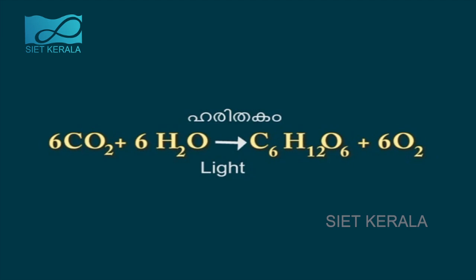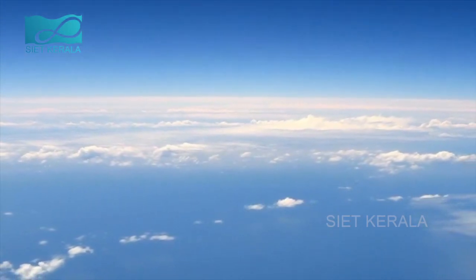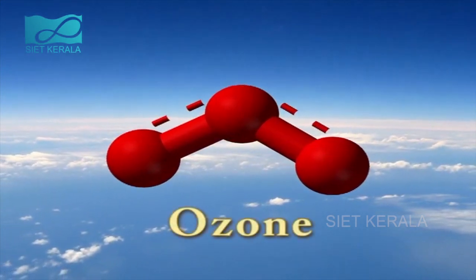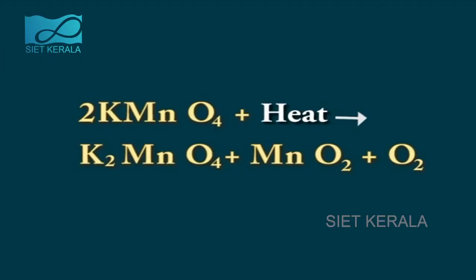Photosynthesis equation: 6CO2 + 6H2O, in the presence of light, gives C6H12O6 + 6O2. Oxygen is also found in air in a triatomic form called ozone. Oxygen can be produced in the laboratory by heating KMnO4 (potassium permanganate): 2KMnO4 + heat → K2MnO4 + MnO2 + O2.